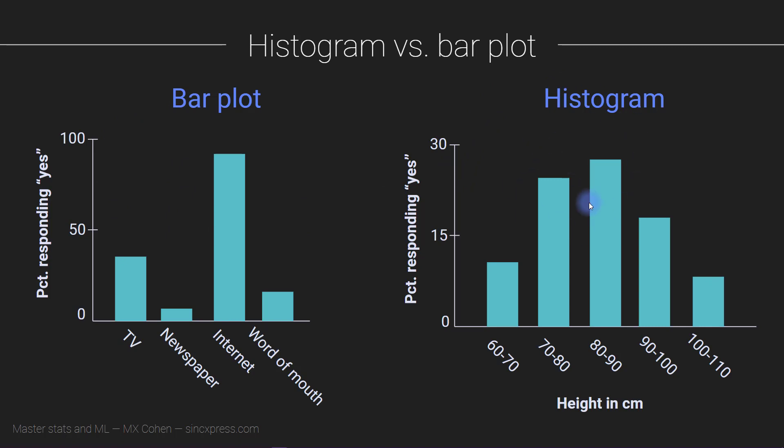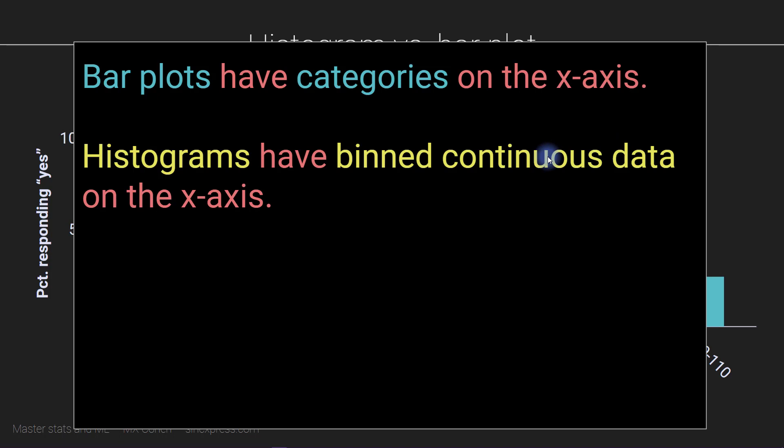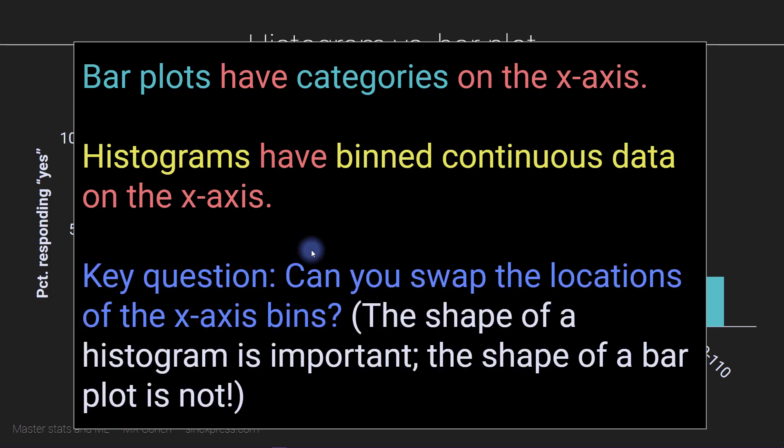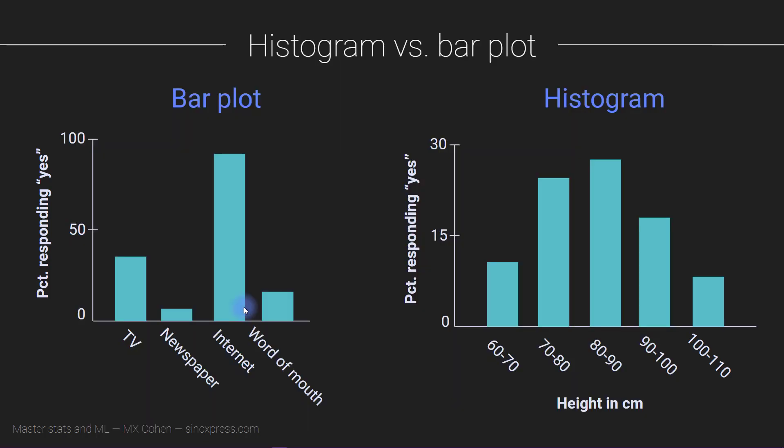This is a bar plot, this is a histogram. There is a key difference. Bar plots are for categorical data and histograms are for numerical data. The main difference is that we can swap the locations of the x-axis bins for a bar plot but not for a histogram. For example we can swap internet and word of mouth. That's totally fine. It's kind of arbitrary how I've ordered them here.